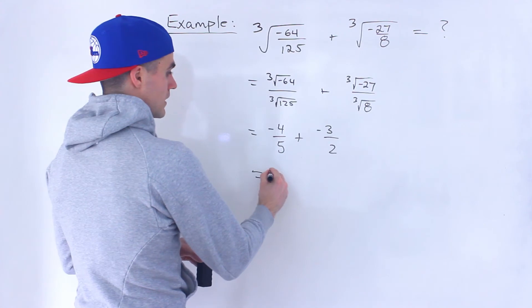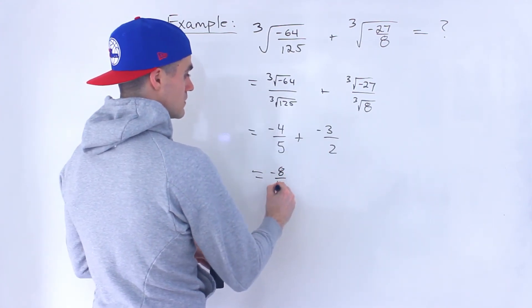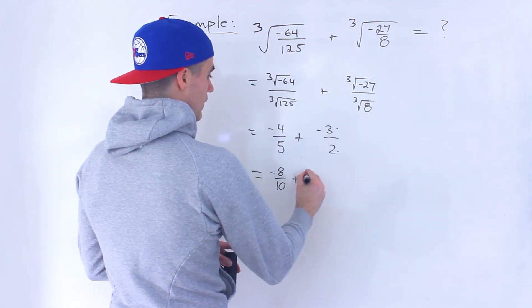So we would end up getting a common denominator of 10. Multiply this by 2, multiply the top by 2, multiply this by 5, top by 5.